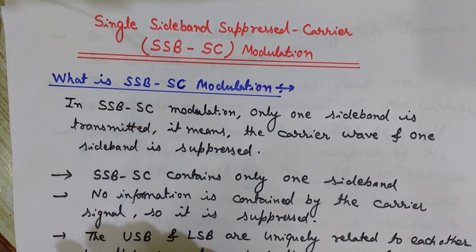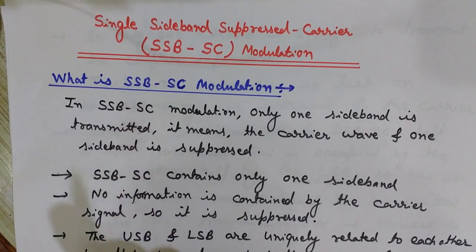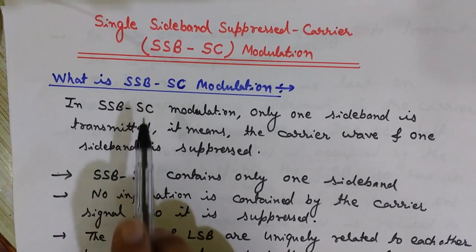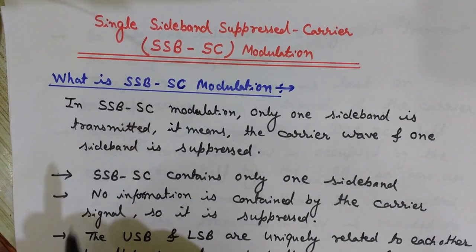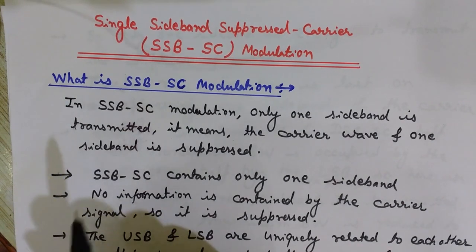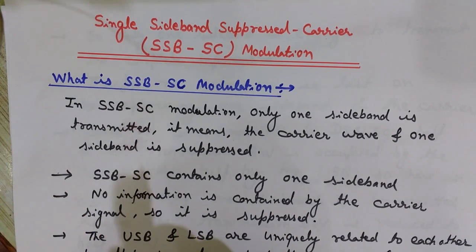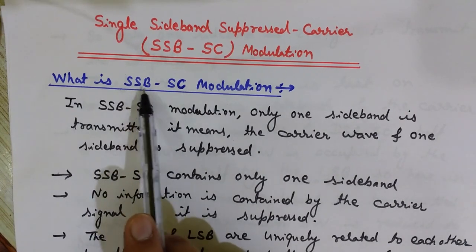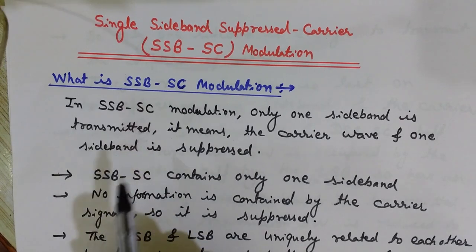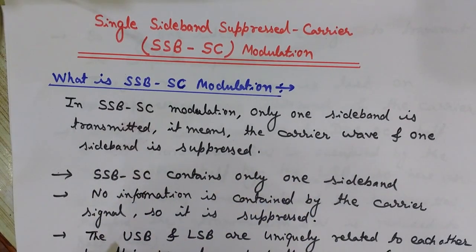Why transmit only one sideband? Because both sidebands each independently carry the complete information — only one sideband is needed to carry the whole information without any loss. By suppressing one sideband, further power is saved. So only one sideband is transmitted to increase power efficiency.